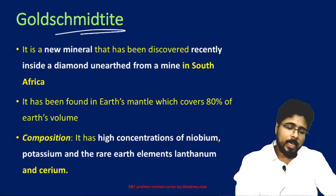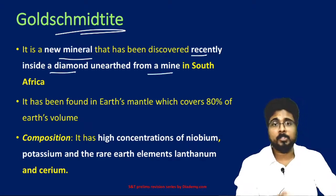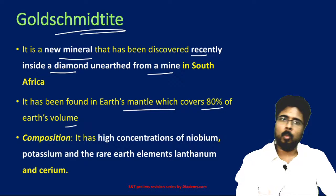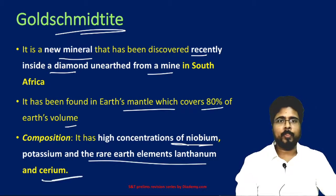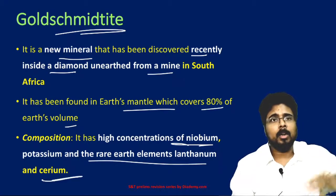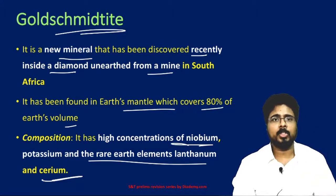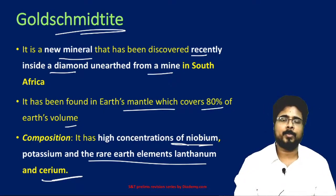Next, goldsmithite. This is because a new mineral has been discovered recently inside a diamond from a mine in South Africa. It has been found in Earth's mantle, which covers 80% of Earth's volume. It has a high concentration of niobium, potassium, and rare earth elements lanthanum and cerium. Goldsmithite is a new mineral; its composition includes niobium, potassium, lanthanum, and cerium.